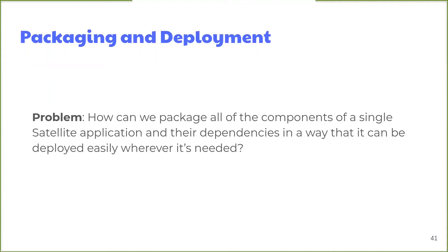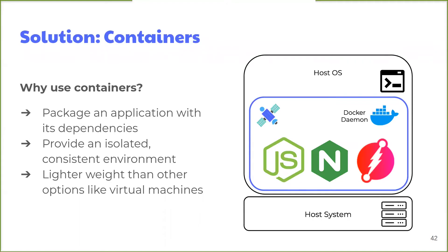The problem we faced was: how can we package all of the components of a single Satellite application and their dependencies so that it can be deployed easily wherever it's needed? The solution was containers. Containers provide a way to package an application with its dependencies in an isolated and consistent way. If you start a Node.js container, that container has all the requirements to run Node packaged with it. The isolation of containers means that whatever is going on inside the container doesn't interfere with the host system. Containers are also lighter weight than virtual machines — virtual machines require running an entire guest operating system, while containers run directly within the host OS and use less resources, making them faster to deploy. Since Docker is the most popular way to package applications using containers, we chose Docker containers to package the components of Satellite.